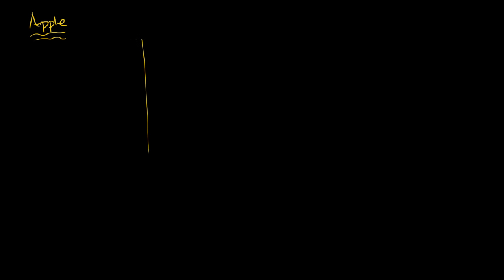So let's say we are in the apple market. What I want to do in this video is think about both demand and supply for apples at different prices. So let's draw ourselves a little graph here. The vertical axis is the price axis — we're going to say it's price per pound. And the horizontal axis is the quantity of apples. Let's put some tick marks here: $1 a pound, $2, $3, $4, and $5.